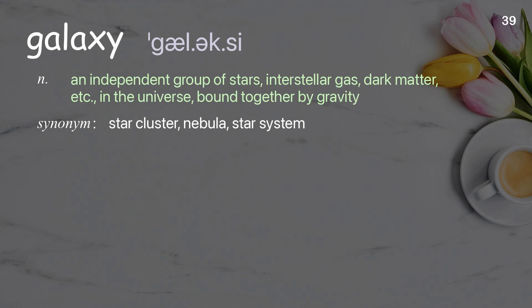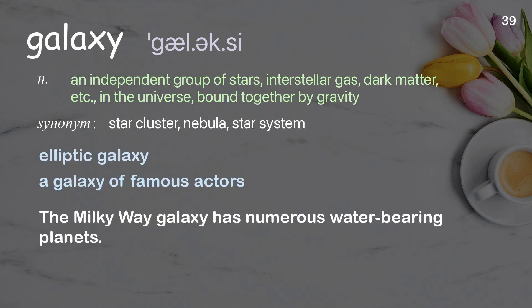Galaxy: an independent group of stars, interstellar gas, dark matter, etc. in the universe, bound together by gravity. Examples: elliptic galaxy, a galaxy of famous actors. The Milky Way galaxy has numerous water-bearing planets.